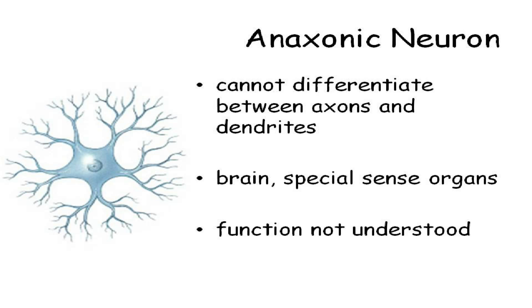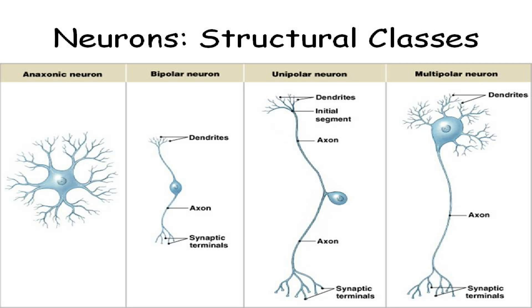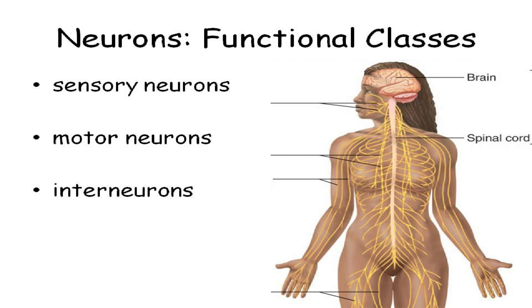Then there are the ones that are confused — sometimes folks don't even mention these. We know there are dendrites and axons, but when you're looking at them, we can't tell them apart. They're called anaxonic — which is a misleading name because there is an axon, but we just can't tell which process is the axon and which is the dendrite. So those are the four structural classes: multipolar, unipolar, bipolar, and anaxonic.